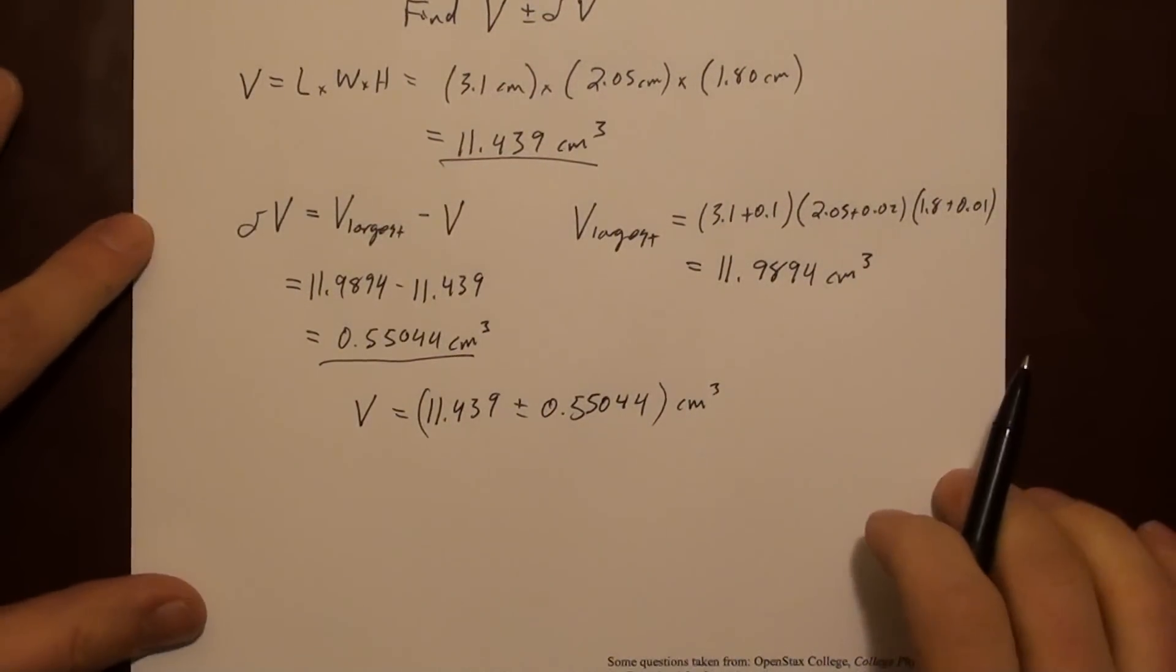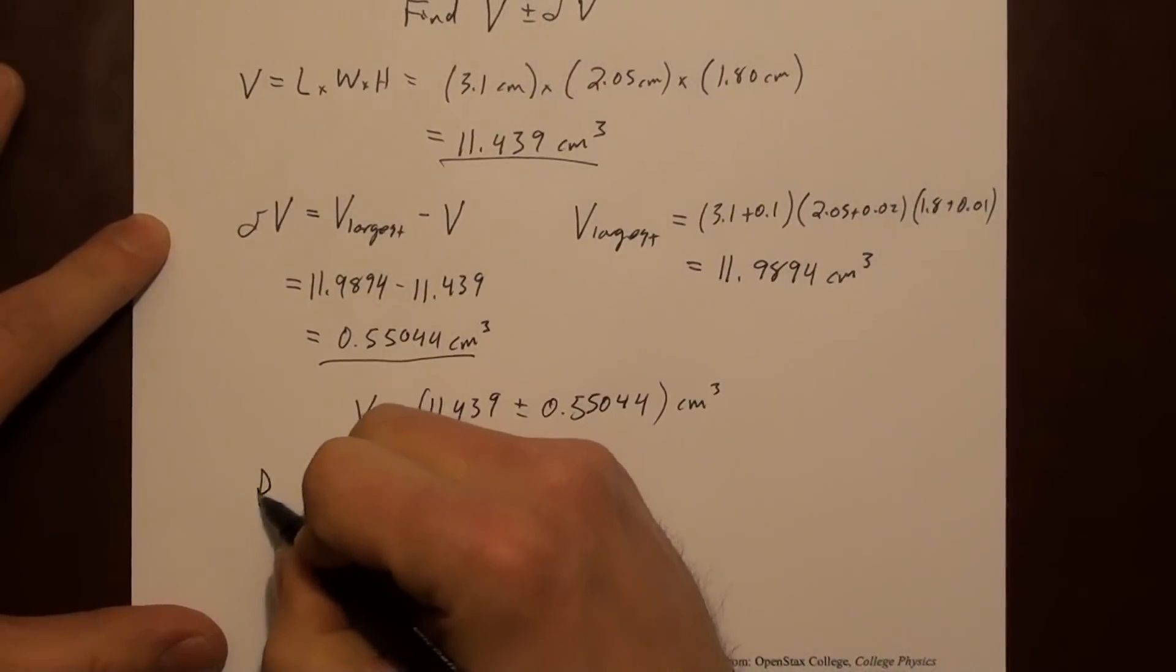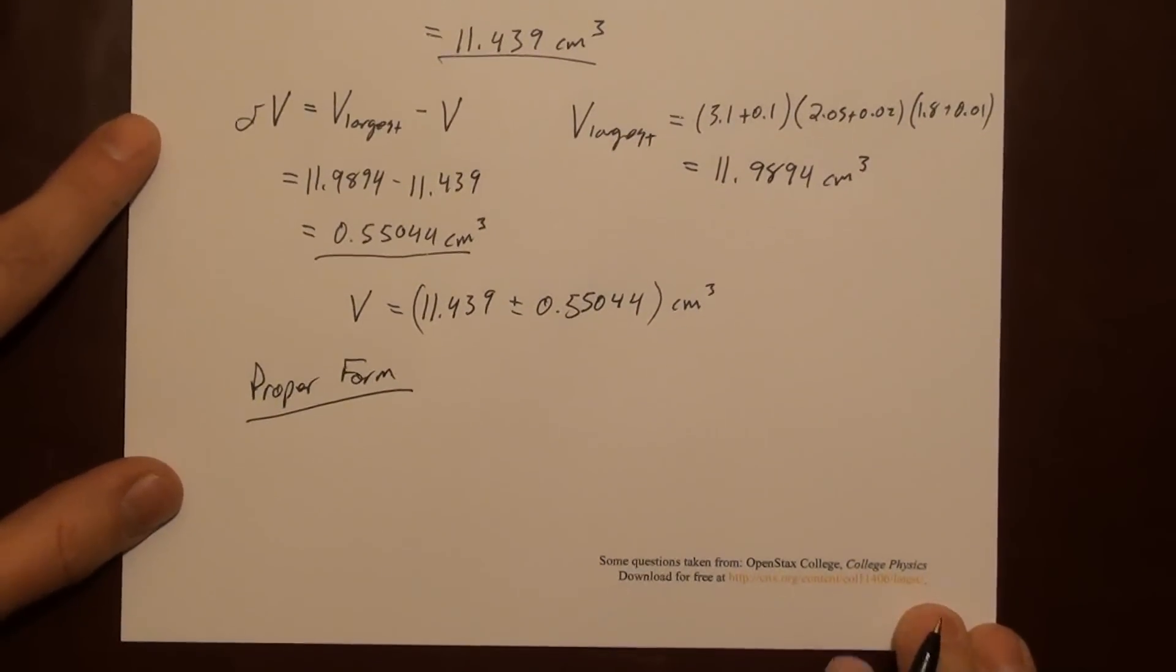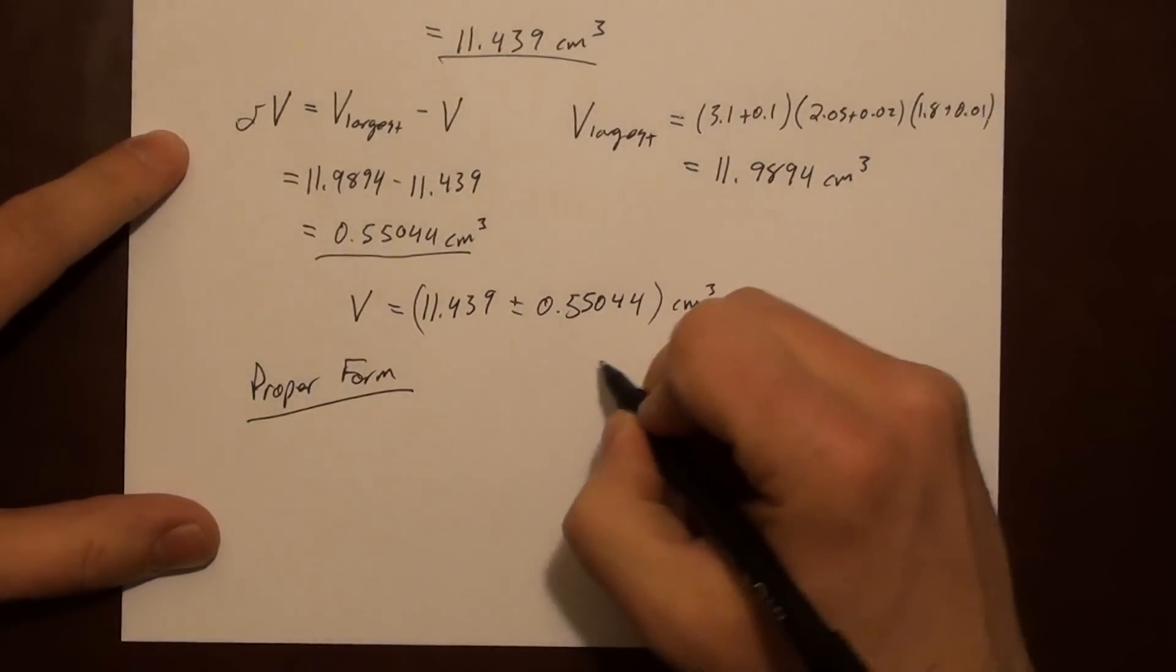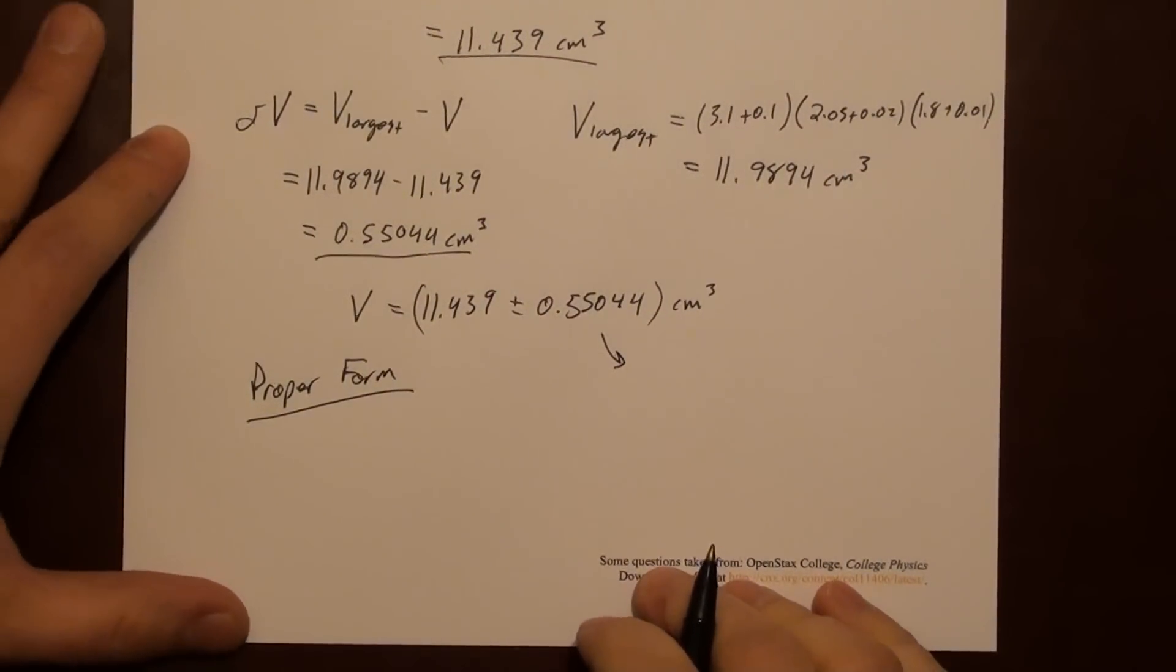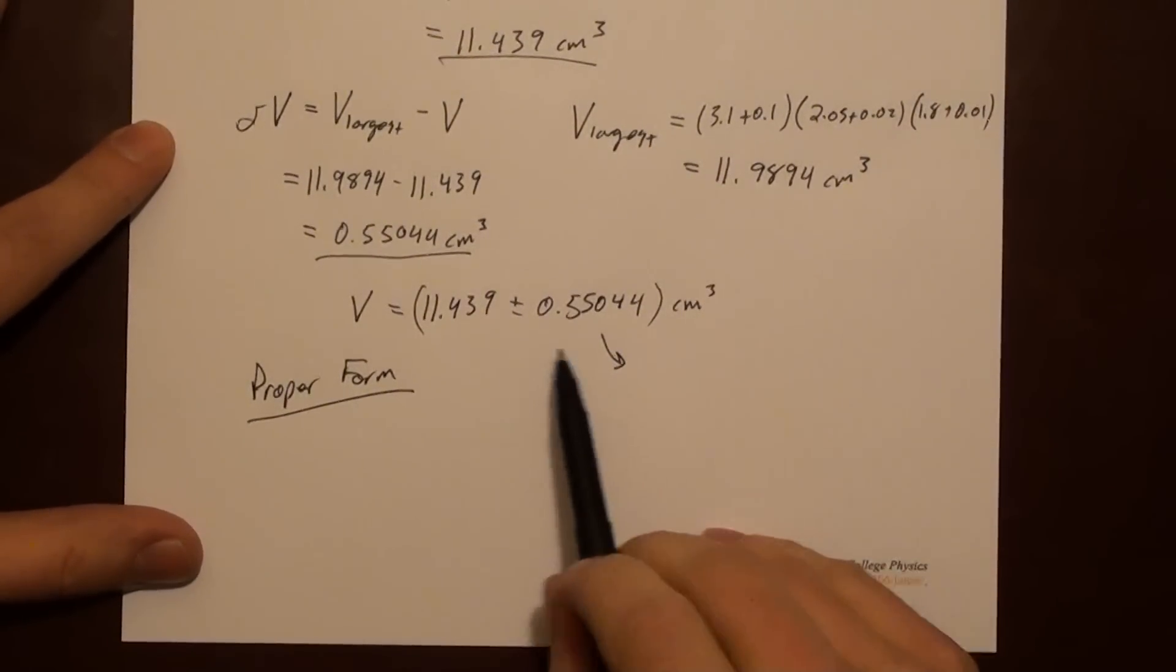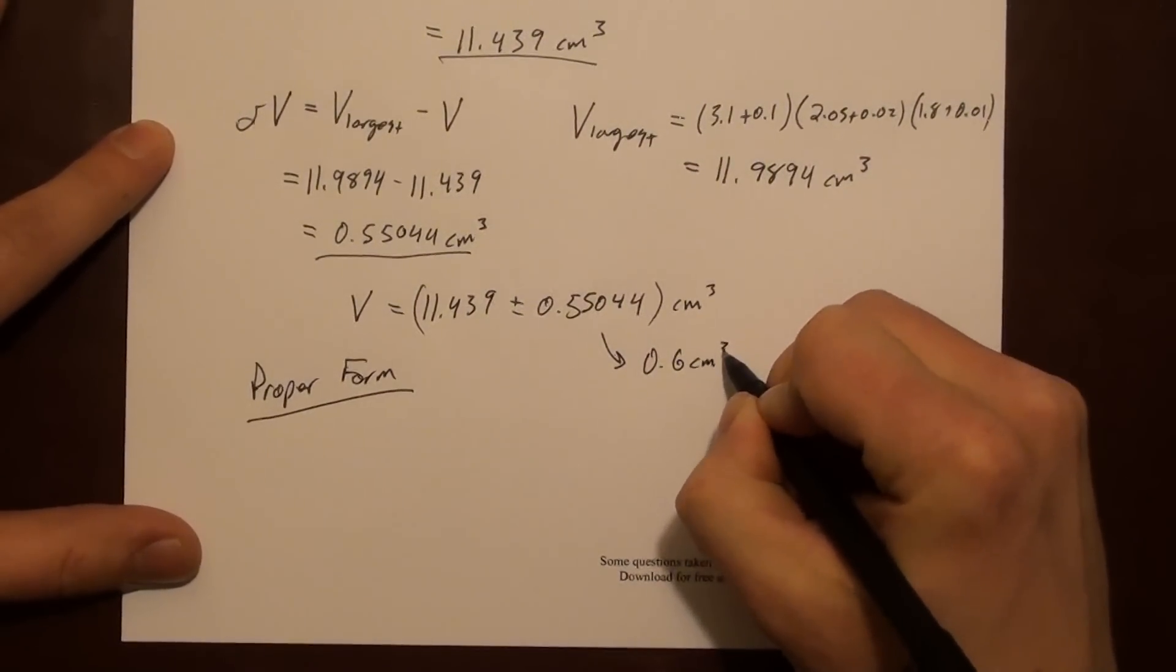But again, there are lots of digits here, and not all of them are meaningful. So we're going to write this in what we call proper form. We can round the error to one significant figure. Because error is inherently uncertain, so we can only trust one digit in the error. So we're going to round this 5 to a 6, so it's 0.6 cubic centimeters.